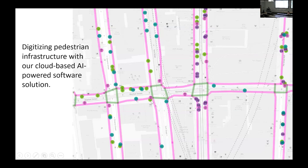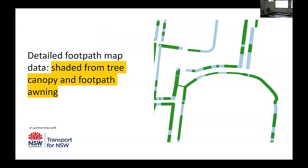We are working on expanding our model to capture post boxes, phone booths, and other relevant information useful for 3D crawlers. Another use case is a shading map. As we heard from the keynotes, heat-related death is one of the major public health concerns, and heat waves are one of Australia's deadliest environmental disasters. A shading map can identify which parts of the city have more or less canopy cover, and we can also identify which bus stops are more susceptible to heat waves, helping planners make better decisions.